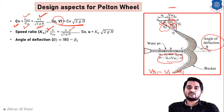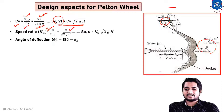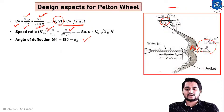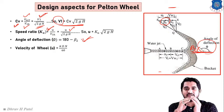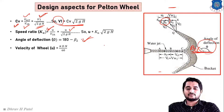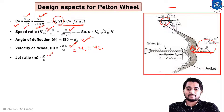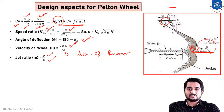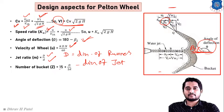Third, the deflection angle phi equals 180 degrees minus beta2, using the alternate angle concept. The velocity of the wheel: at both ends of the bucket the same velocity occurs since both ends are attached to the same runner, so u1 equals u2 equals u equals pi*D*N divided by 60, where D is the diameter of the runner. The jet ratio is capital D divided by small d, where D is the runner diameter and d is the jet diameter.